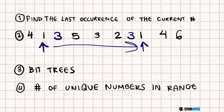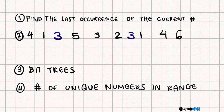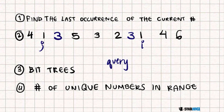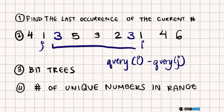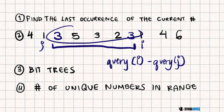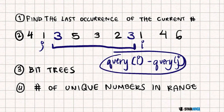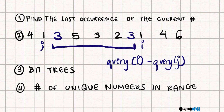So instead we're going to use Binary Indexed Trees (BITs). With BITs we have update and query operations. We'll be able to take query(i) minus query(j) — where i and j are the bounds of our range — and this value gives us the number of unique breeds in that range, because the BIT tracks the number of elements with a unique value within the range. We loop through, find the last occurrence, take this range, take the query value, add it to the answer, move on to the next value, and do the same thing for every cow.